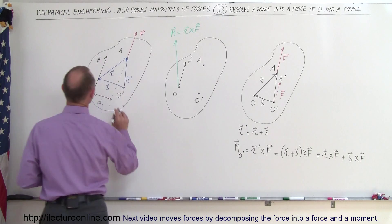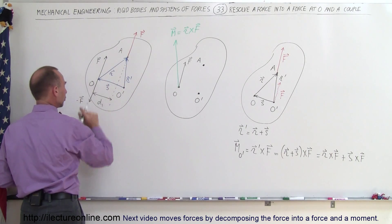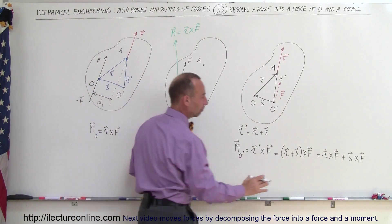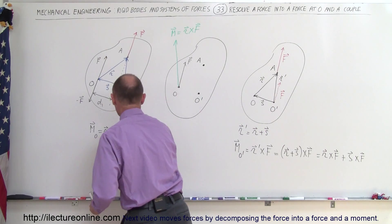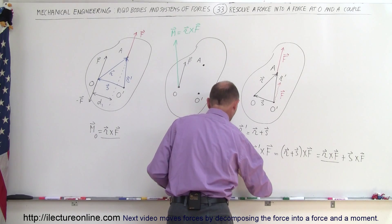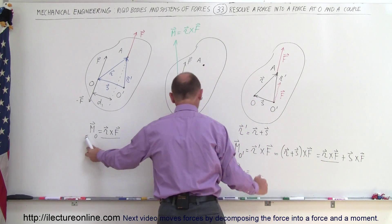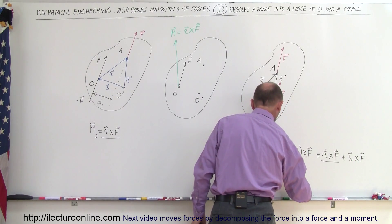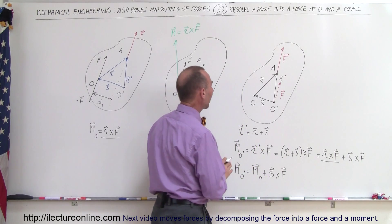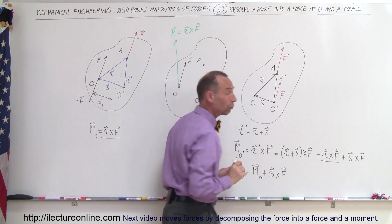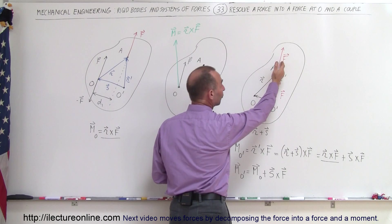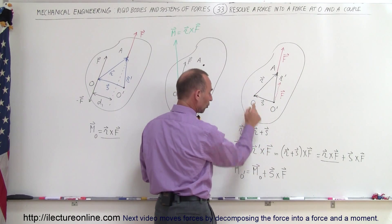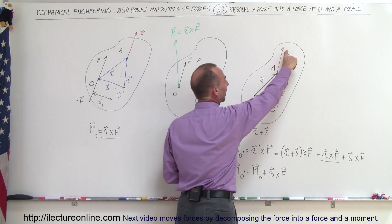Now R cross F is the moment about point O. So we can substitute to get: the moment about O prime equals the moment about O plus S cross F. This means that if we move the force to any other arbitrary point O prime, we can find the new moment about that point by taking the original moment about O and adding the cross product of S times F.